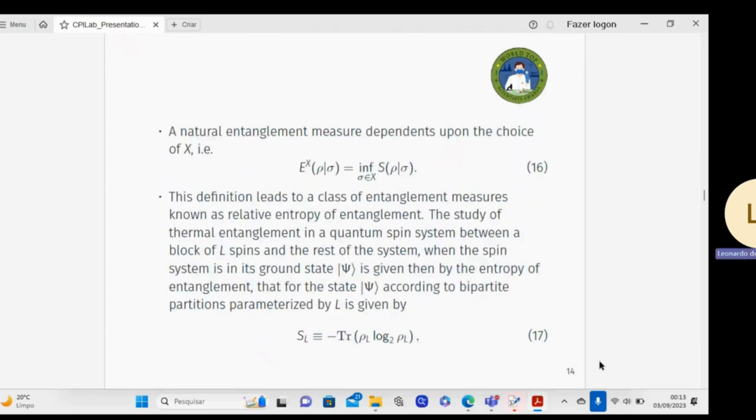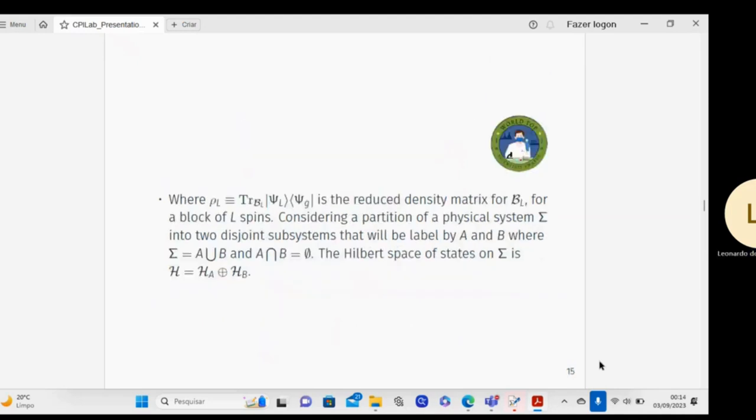The quantum state and sigma is defined by equation 14. For a pure state, I have the bipartite entanglement depends upon the size of X as expressed by equation 16. I have the entropy for a block of L spins defined by equation 17, and I have rho L, the reduced density matrix for a block of L spins.